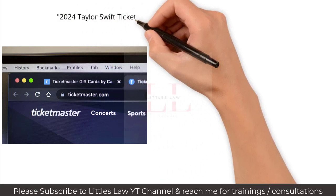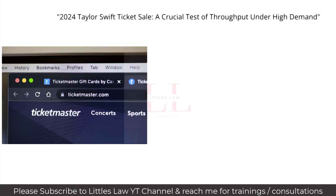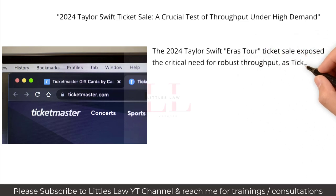Now for an example that underscores the importance of throughput: the significant traffic surge experienced by online ticketing platforms during the sale of tickets for Taylor Swift's Eras Tour in 2024. Due to exceptionally high demand, millions of users attempted to purchase tickets simultaneously when they became available. Ticketmaster, one of the leading platforms handling the sale, faced intense scrutiny as users reported delays, system crashes, and lengthy wait times. The platform's throughput was put to the test as it struggled to manage the overwhelming number of transactions per second.